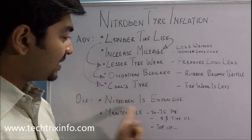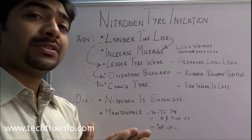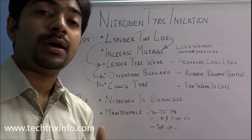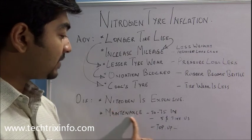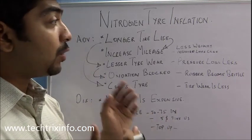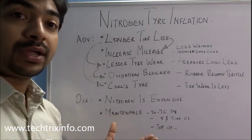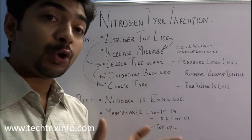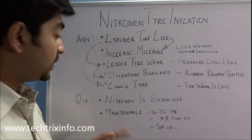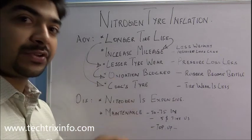Looking at the disadvantages, nitrogen is expensive. In India, inflating each car tire costs nearly 50 to 75 rupees per tire, and in the US and UK it costs about five dollars per tire. Maintenance is also very important — the main factor that reduces tire wear is optimum tire pressure. If you don't top up the tire with nitrogen and don't check for under-inflation, the tire wear will be the same as with compressed air, and mileage will also decrease. So maintenance is very important even when using nitrogen.